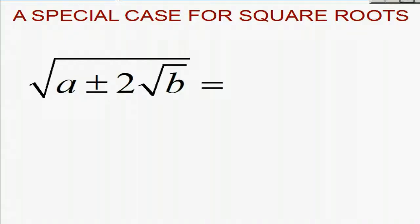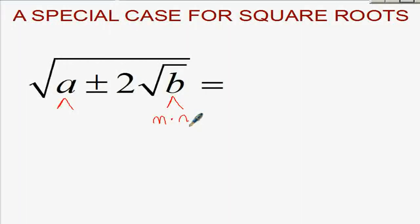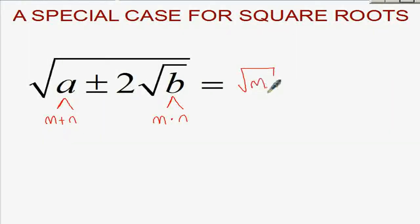Hi everybody. There is a special case about square roots. If we have square root of A plus or minus 2 times square root of B, we must find two numbers M and N where M times N equals B and M plus N equals A. If we can find such numbers, we can simplify the expression to square root of M plus or minus square root of N.